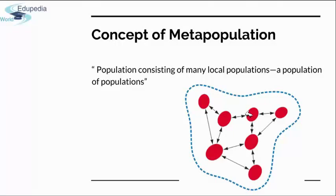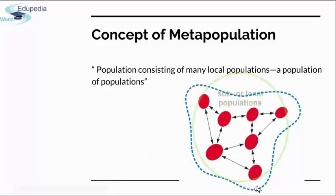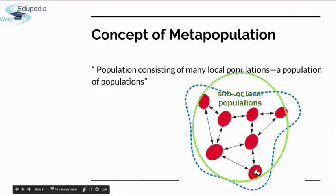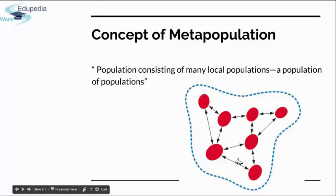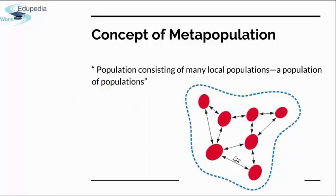This is not often the case in nature. This diagram shows that the distribution of a species — defined by the blue dashed line — is composed of a group of local populations, the red circles, which are always linked by some action of dispersal, represented by the arrows. These processes of interaction between metapopulations keep populations healthy and resistant, and also allow gene flow and adaptation.